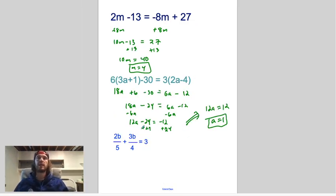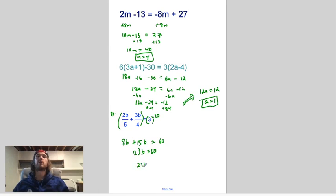And fraction time. We need the LCM of 5 and 4, which is 20. 20, 20, 20. Okay, 20 divided by 5, so 20 over 5 simplifies to 4 over 1, and 4 times 2 is 8b. 20 over 4 simplifies 5 over 5, and 5 times 3 is 15b equals 3 times 20 is 60. Adding those two together, you'll get 23b equals 60. Dividing both sides by 23, and we'll get b equals 60 over 23.